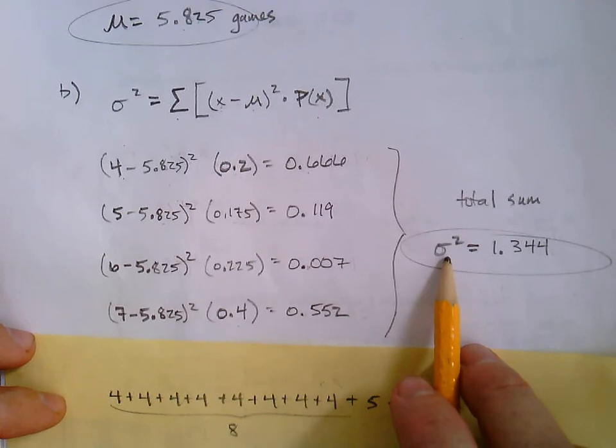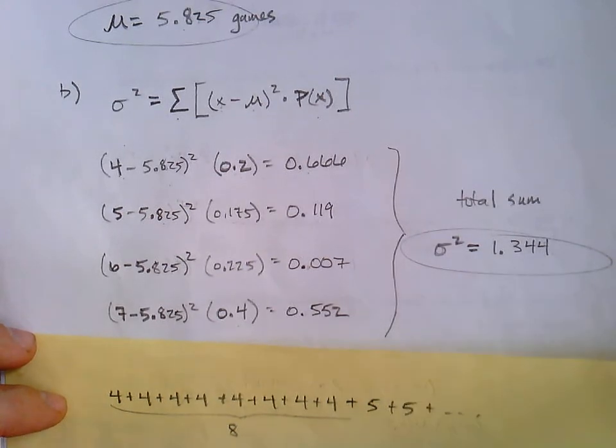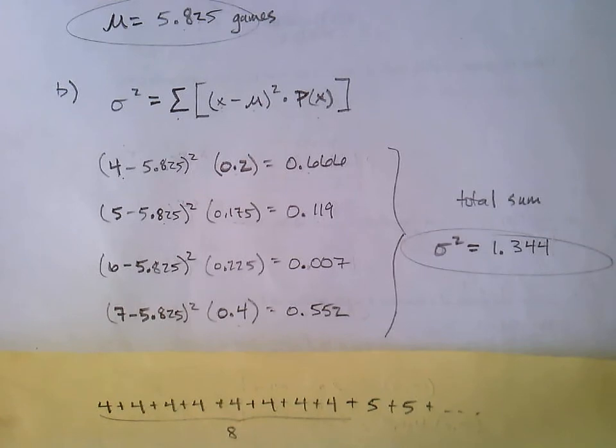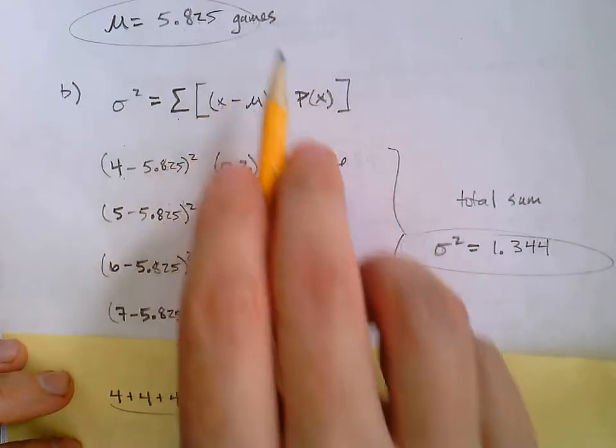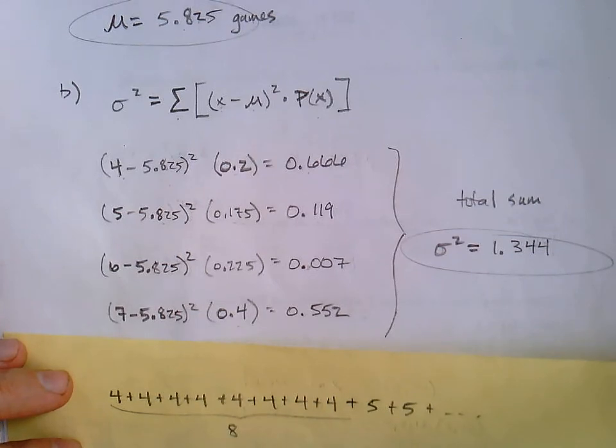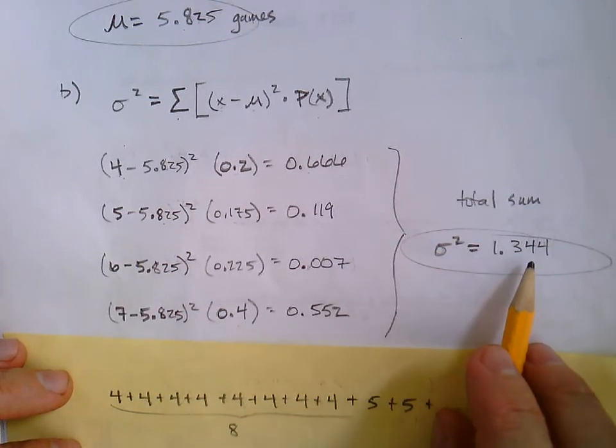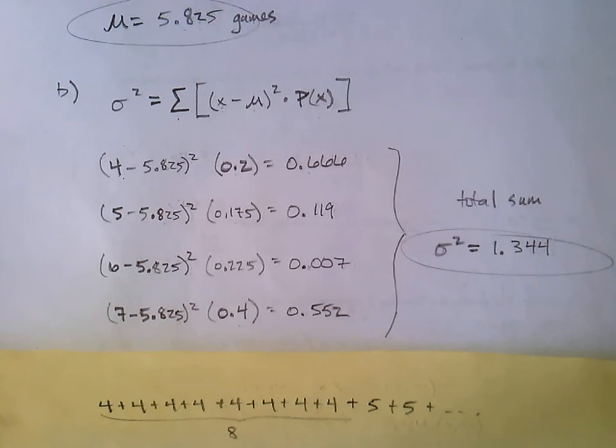Added together, we're going to say sigma squared equals 1.344. And that is our answer here. And if you're wondering what the units are, I didn't write them. It's actually the same. It's still games. 1.344 games. Remember, variance is describing the spread of the data. How spread out are they? We really haven't gotten into the nitty-gritty. But we got the number.